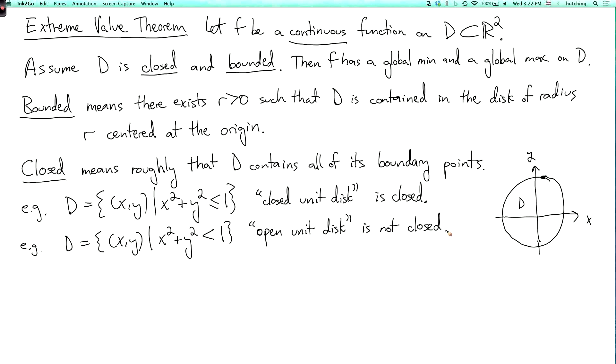So the boundary of the open unit disk is also the unit circle where x squared plus y squared equals 1. But D does not contain all of those points. In fact, it doesn't contain any of those points, and so it's not closed.